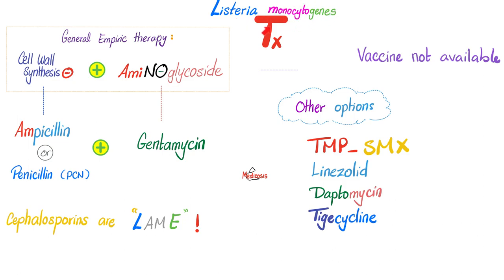How can we treat Listeria? We have general empiric therapy — ampicillin plus gentamicin, as we have discussed in many videos with many organisms. Do cephalosporins cover Listeria? No, because cephalosporins do not cover Listeria. They do not cover enterococci and others, as we will discuss in subsequent videos.